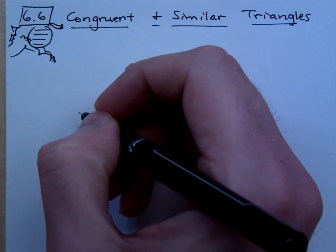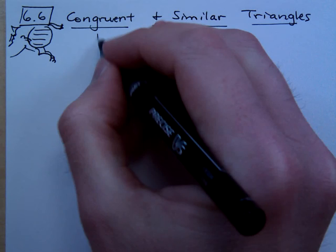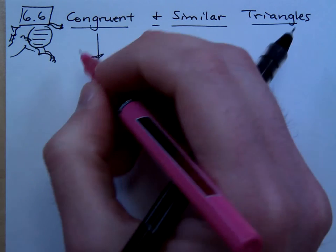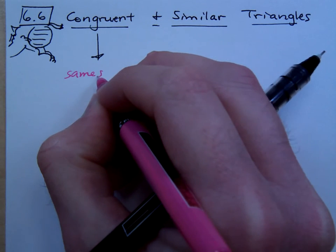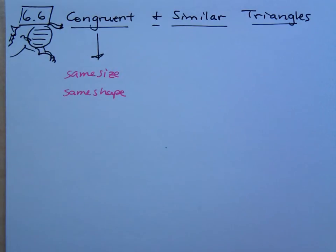Alright, so what does it mean to be congruent again? Congruent means what? Same size. Alright, so congruent, we said same size, same shape, right? So congruent triangles have to be the exact same shape and size.